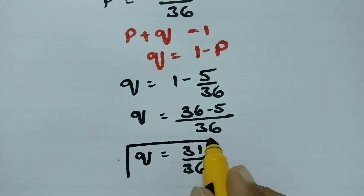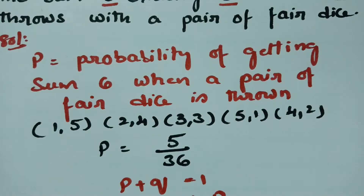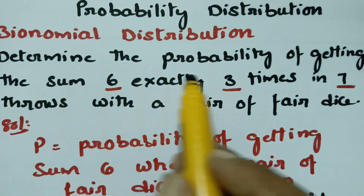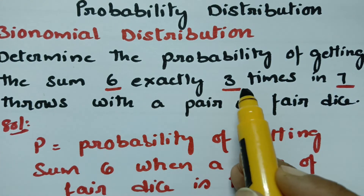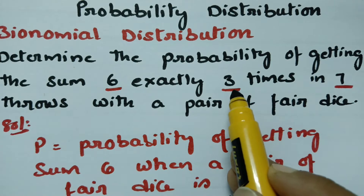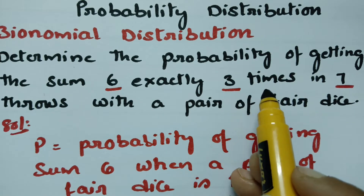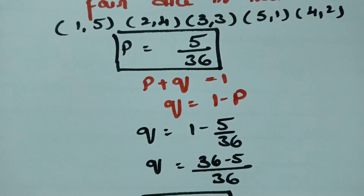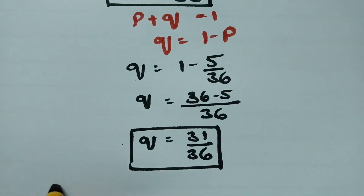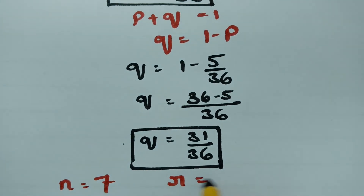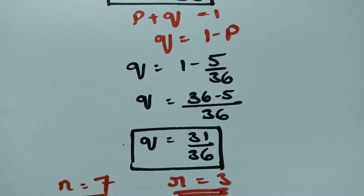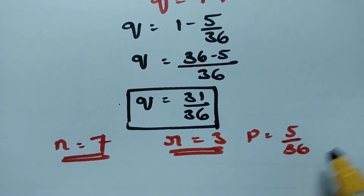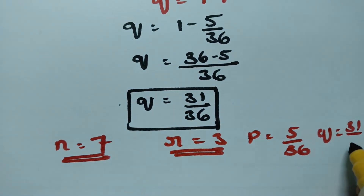So we have P = 5/36 and Q = 31/36. From the question, we need the sum 6 exactly 3 times in 7 throws, so N = 7 and R = 3.